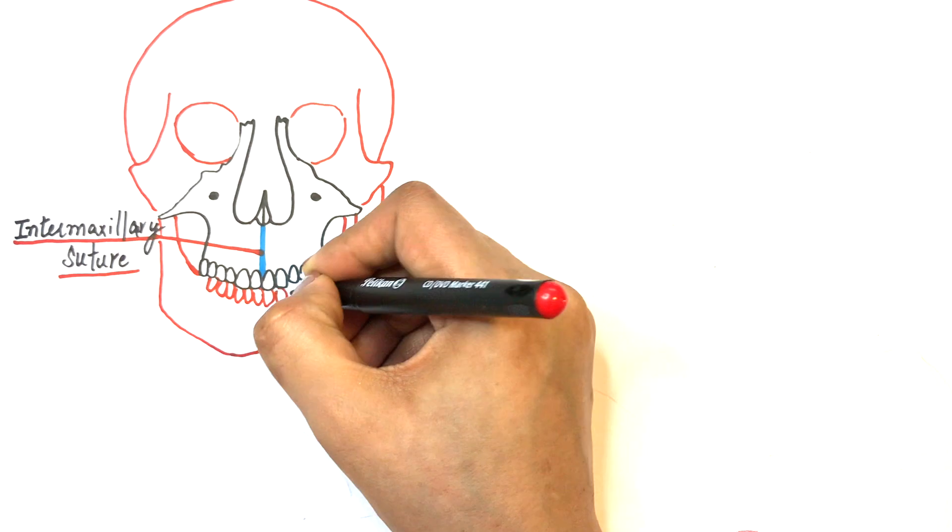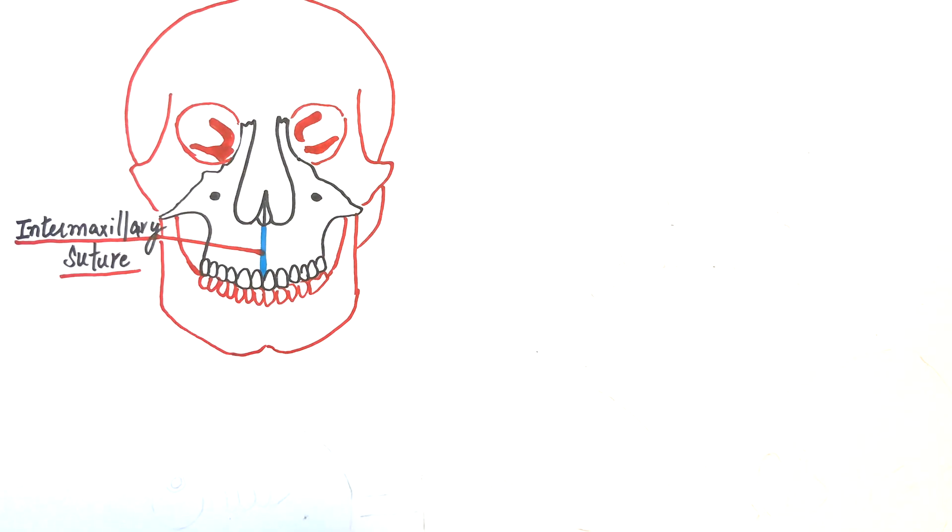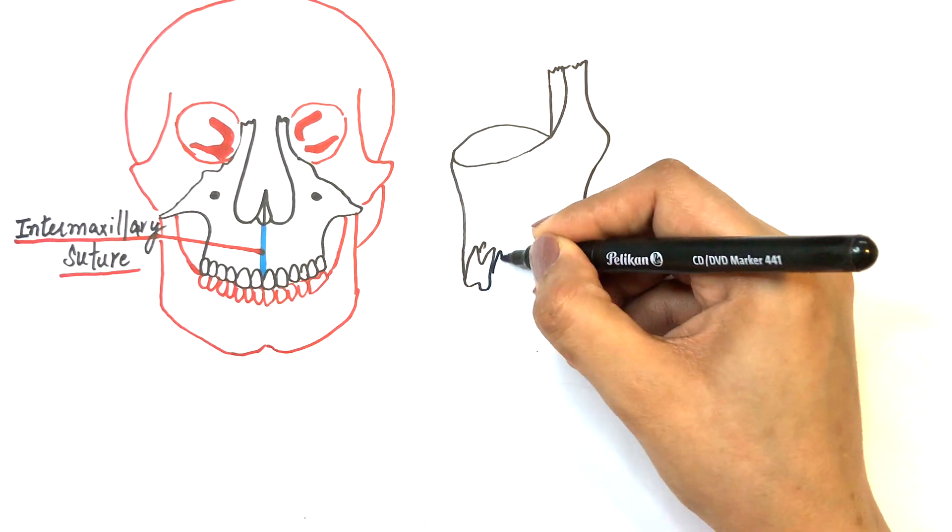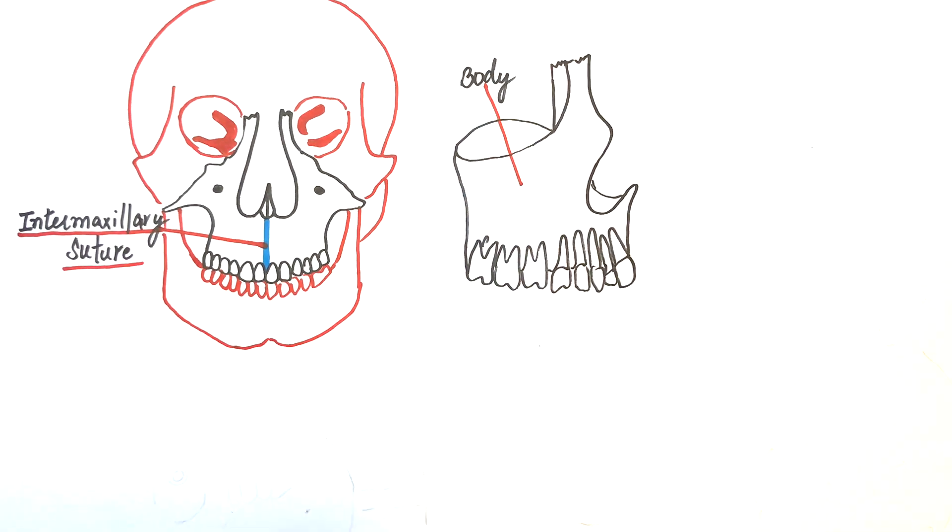It forms the dominant portion of the face. On this lateral view, the two main parts maxilla has is the body and the processes.